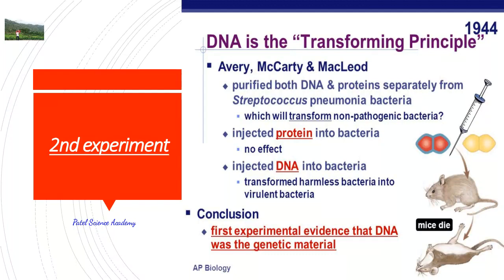After the Griffith experiment, in 1944, after some 10 years of research and experimentation, U.S. microbiologist Oswald T. Avery, MacLean McCarty, and Colin M. MacLeod — these three biologists, all at Rockefeller University in New York — provided the first evidence to prove that DNA is a genetic material, after the Griffith experiment which had termed it a transforming principle.